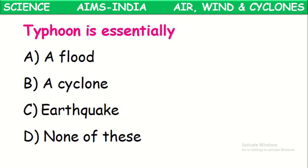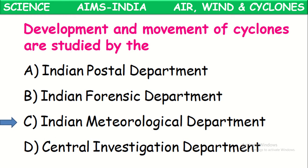A typhoon is essentially a form of cyclone. Development and movement of cyclones are studied by the Indian Meteorological Department. The scientists working there study weather and climatic conditions and give prior indications and cautions to people about cyclones and storms.